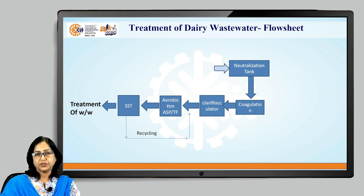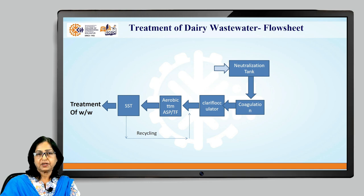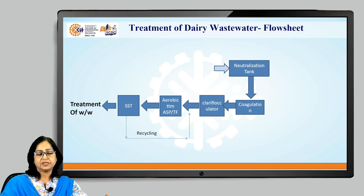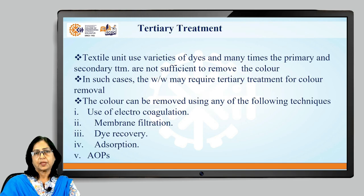Looking at the wastewater treatment flow sheet, it starts with equalization, then neutralization, coagulation, flocculation and settling, followed by aerobic treatment such as activated sludge process and trickling filter, then a secondary settling tank. The supernatant from the secondary settling tank is ready for disposal after disinfection.